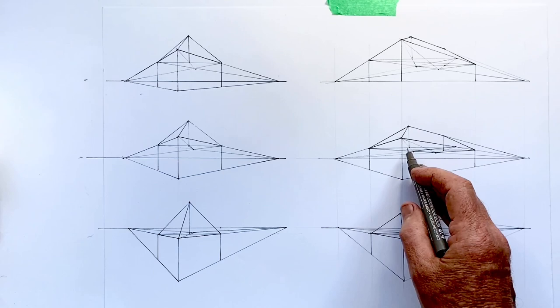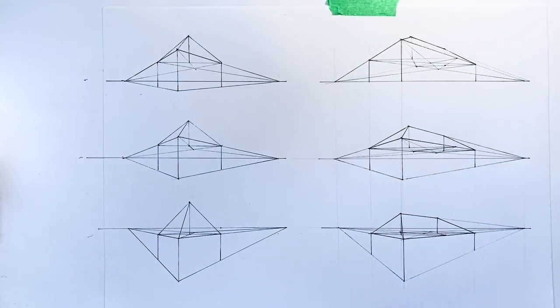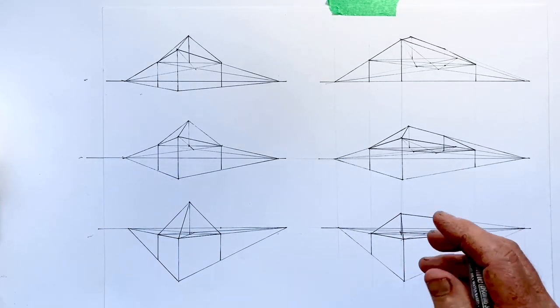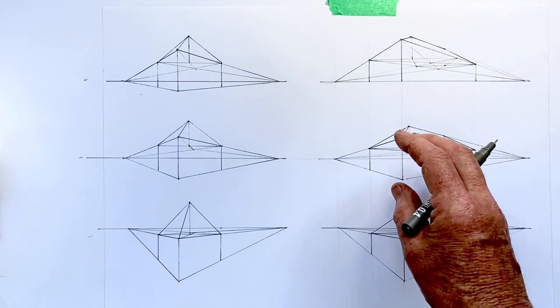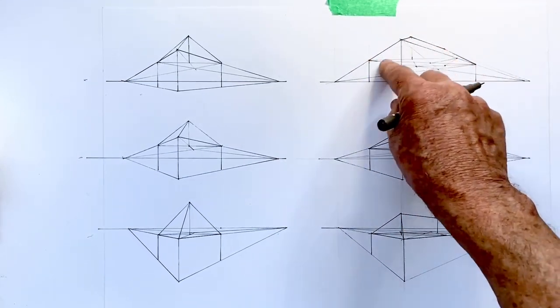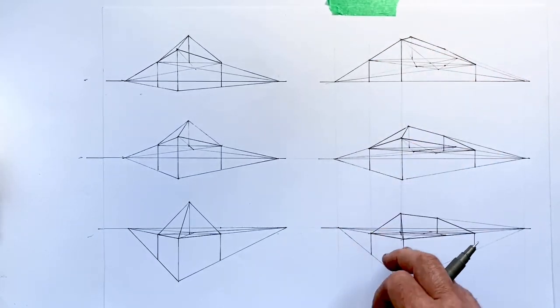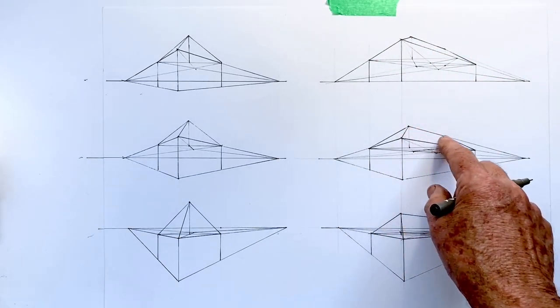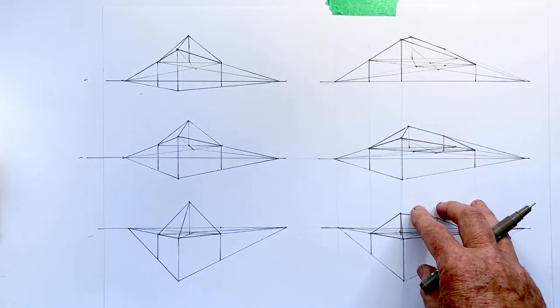Now, exactly where these points are will depend on your building and roof design. And if you go to my video on an exact method for working out foreshortening, there is there an easy method to divide this space into as many perspectively correct divisions as you might need. So if you want these lines closer to the edge than a quarter of the distance in on each side, you can use that method to do it.